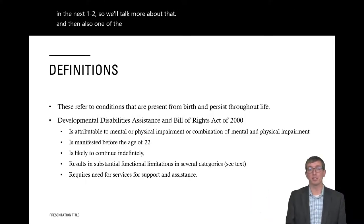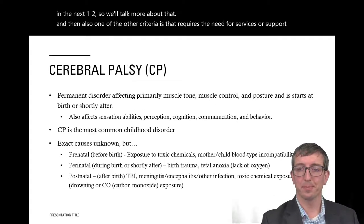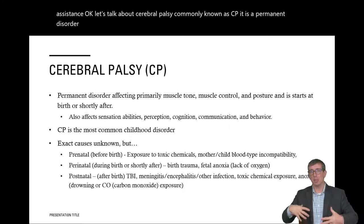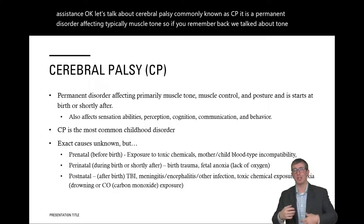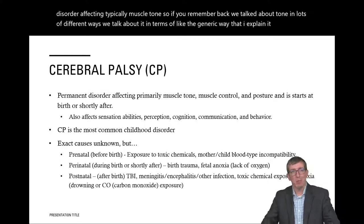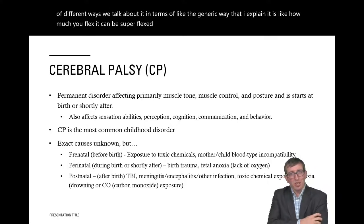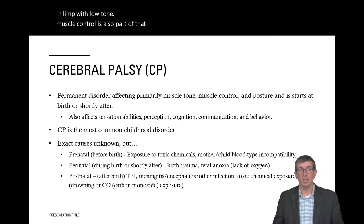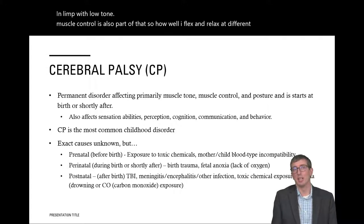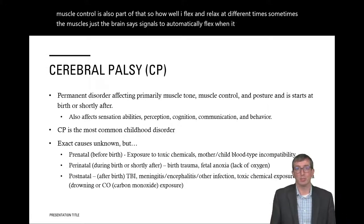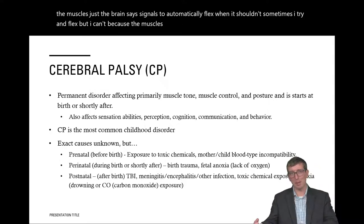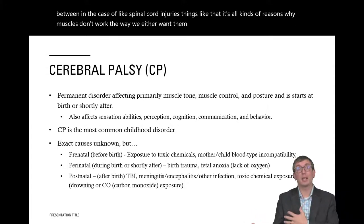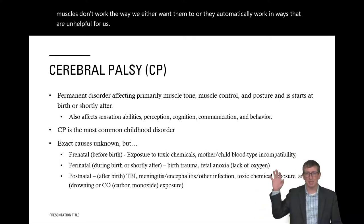Another criterion is the need for services, support, or assistance. Now let's talk about cerebral palsy — commonly known as CP. It is a permanent disorder typically affecting muscle tone, which can be high tone, meaning overly flexed, or low tone, meaning flaccid and limp. Muscle control is also part of that — how well muscles flex and relax at the right times. Sometimes the brain sends signals to automatically flex when it shouldn't, or a person tries to flex but can't.